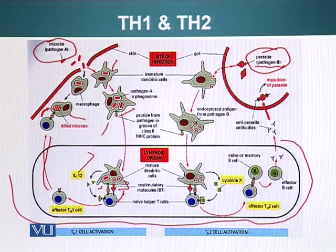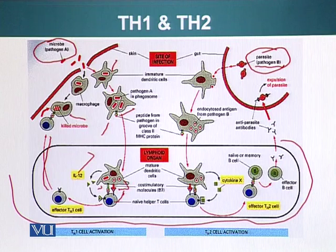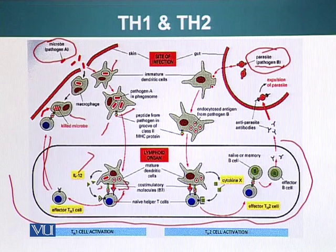This is one route. We started with the skin infection. The bacteria was engulfed by the antigen presenting cell, which went to the peripheral lymphoid organ and activated the helper T cell — not only activating it, but also guiding this helper T cell into the lineage of helper T cell type 1.